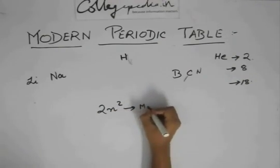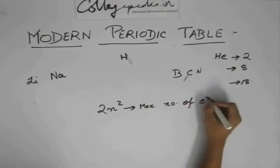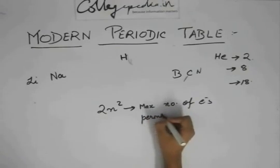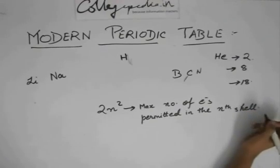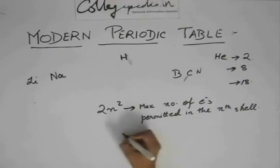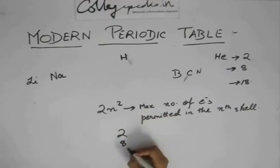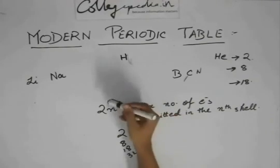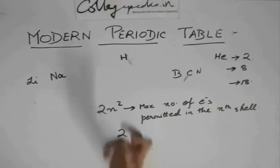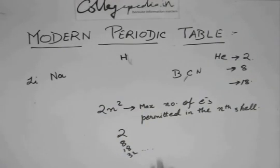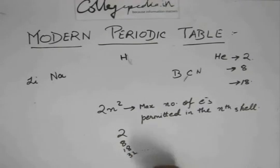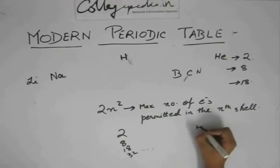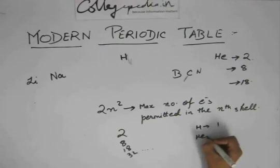Two n squared is the maximum number of electrons permitted in the nth shell. So if the shell is one, then it's two. If the shell is two, then it's eight. If the shell is three, then it's 18, then 32, and so on. The first shell can take only two electrons. In the first period, the first shell is getting filled. So if it can take only two electrons, we cannot have more than two elements in the first period. Hydrogen will have electronic configuration one, and helium will have two.